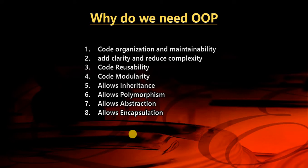Why do we need object-oriented programming? First, we need it for code organization and maintainability. OOP helps you write efficient code — the main aim is that you don't repeat yourself. If you find yourself repeating a particular function or variable over and over, you need OOP. It adds clarity and reduces complexity. OOP also enables code reusability, modularity, and supports the four pillars: inheritance, polymorphism, abstraction, and encapsulation.